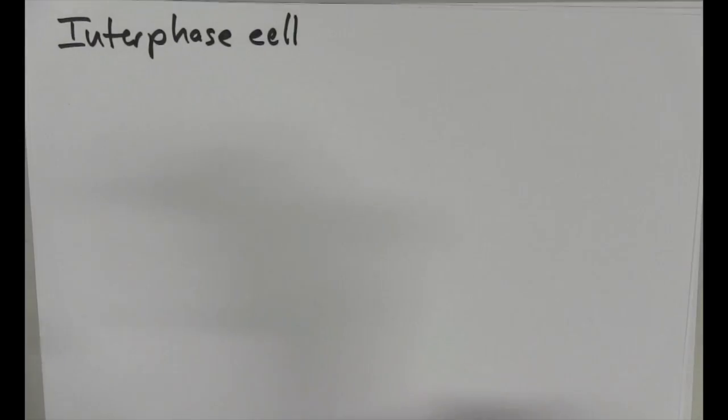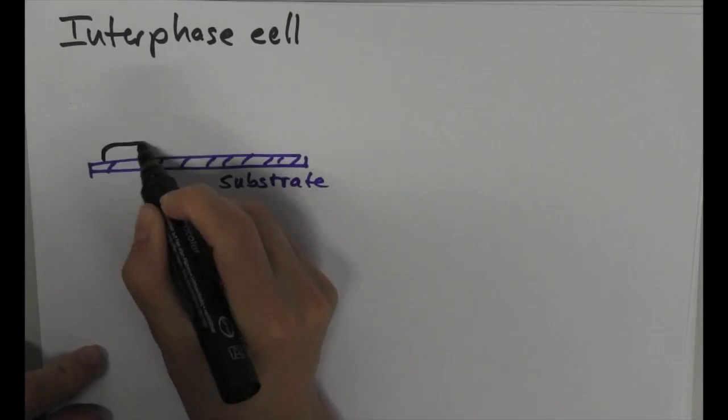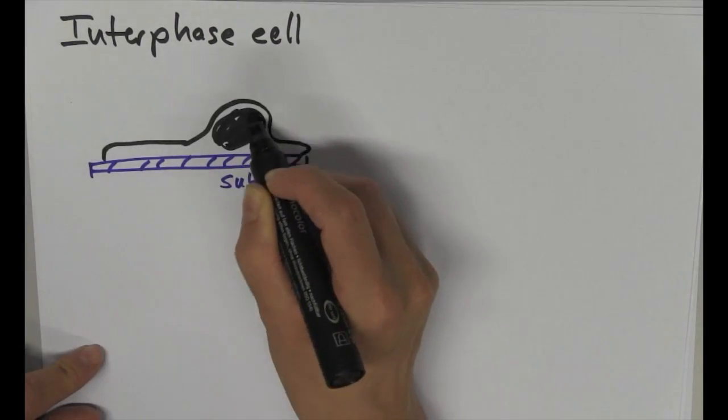When we grow animal cells in culture, we see that in interphase, that means cells that are not dividing, cells are very much spread out on the substrate and have a flat and irregular shape.